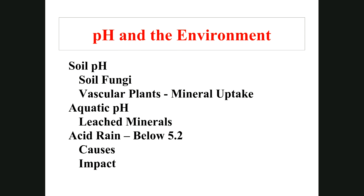Aquatic pH can also be changed — several lakes around the world have been altered by mining industries that use water to process materials extracted from the earth. This water has an adverse pH and flows into lakes; the lakes try to buffer it, leaching out minerals, until they can no longer buffer anymore. The pH becomes adverse for plant and animal life, so the lakes end up with no algae, no plants, no fish, no minnows — all dead.